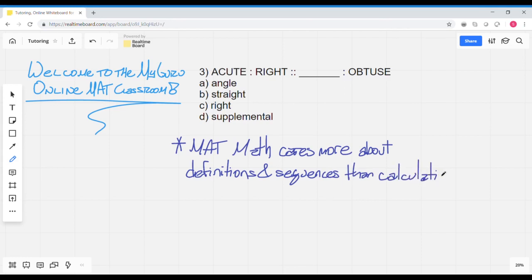Now that all said, the first step as we already know for any MAT analogy problem is going to be to identify what the pivot term is going to be based on this pair of double dots that indicates that you cannot relate term B to term C. So since term C is the blank, we know that term B is going to be our pivot. So we have to identify how right relates to either acute or obtuse.